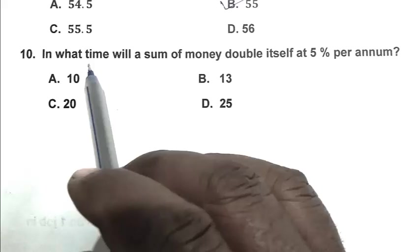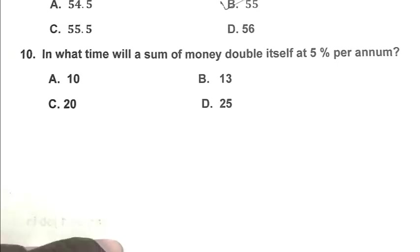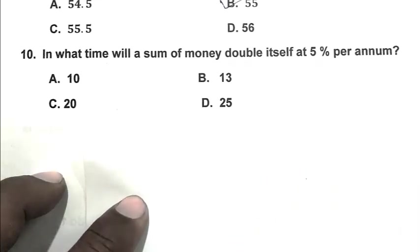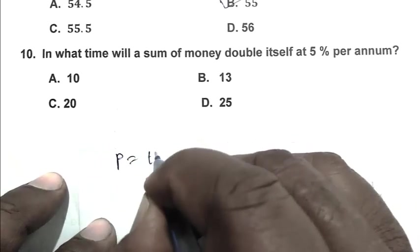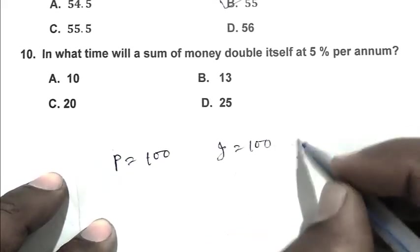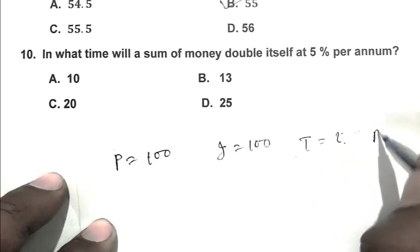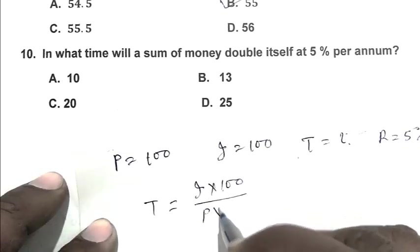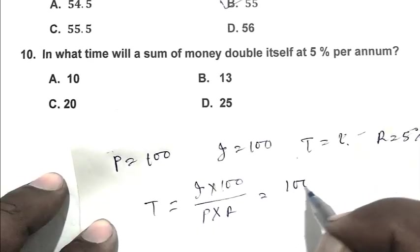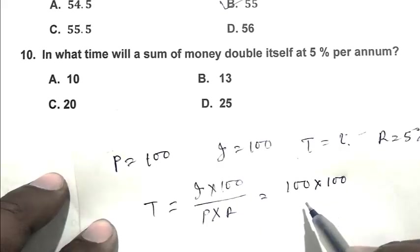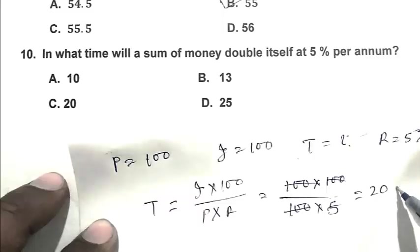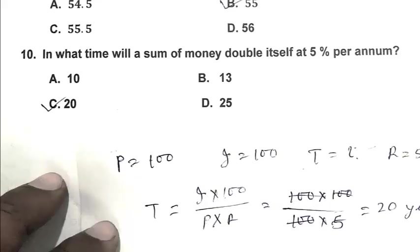Question number 10: In what time will a sum of money double itself at 5% per annum? So friend, when money doubles itself, it means when I deposit 100 rupees in a bank, we get 200 rupees as the amount. So interest becomes 100. We take principal as 100, then interest is 100. Time we have to calculate, and rate is 5%. So friend, time equals interest multiplied by 100 divided by principal multiplied by rate. So friend, it's 100 multiplied by 100 divided by 100 and rate 5%. So friend, it becomes 20 years. So friend, C is the right answer. Thank you for watching, have a good day.